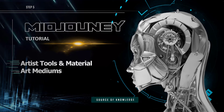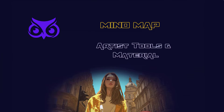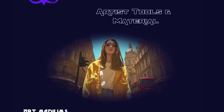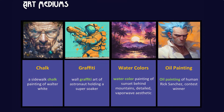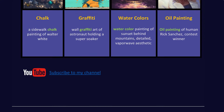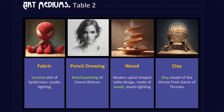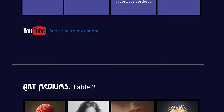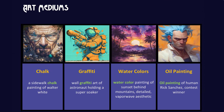Let's get to work. Before you is a table with prompts that we'll use to create our images. In the first column, we see drawings created with chalk. They depict Walter White — a fictional character from the TV series Breaking Bad.